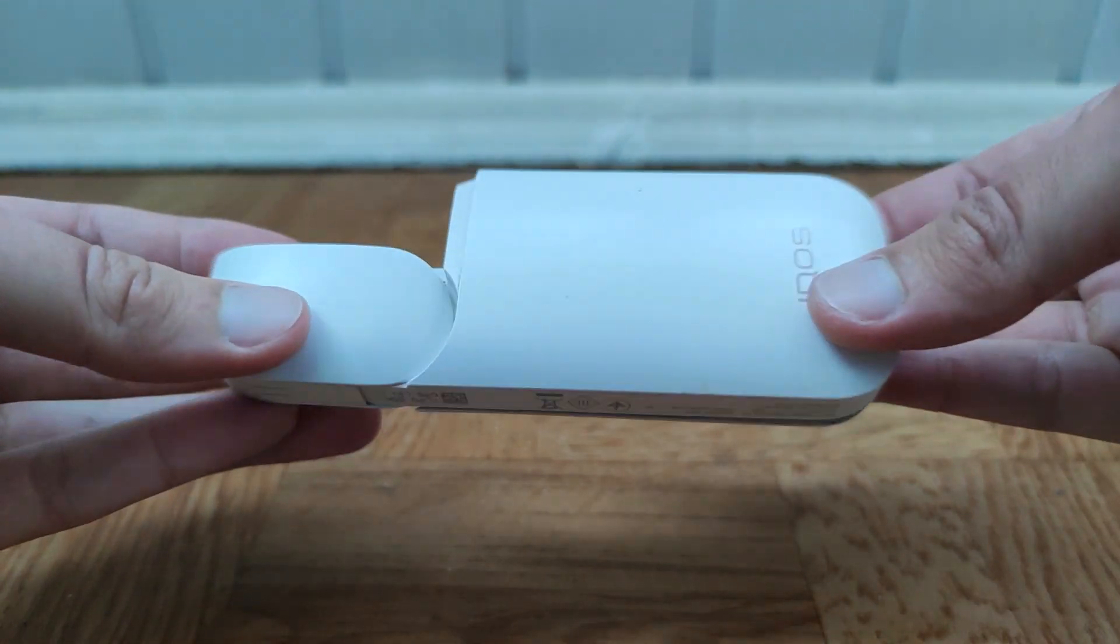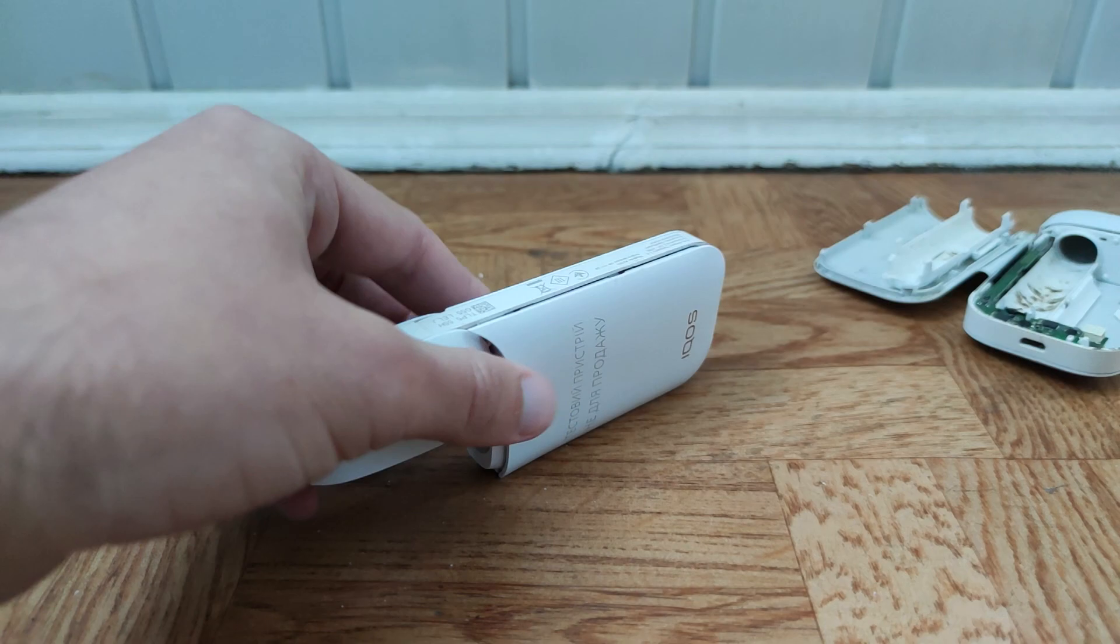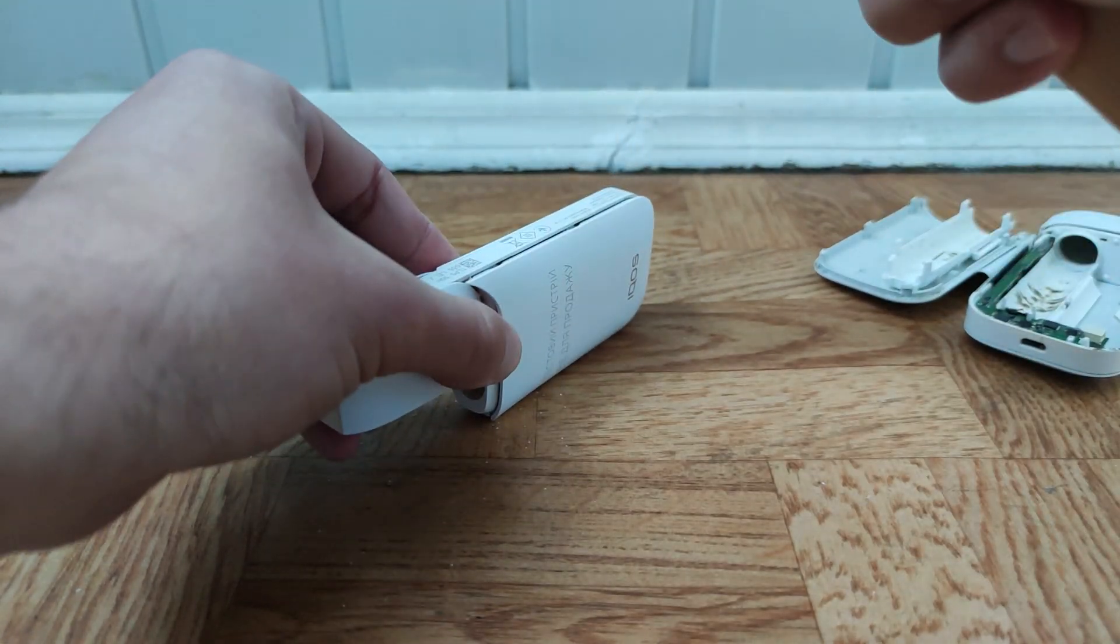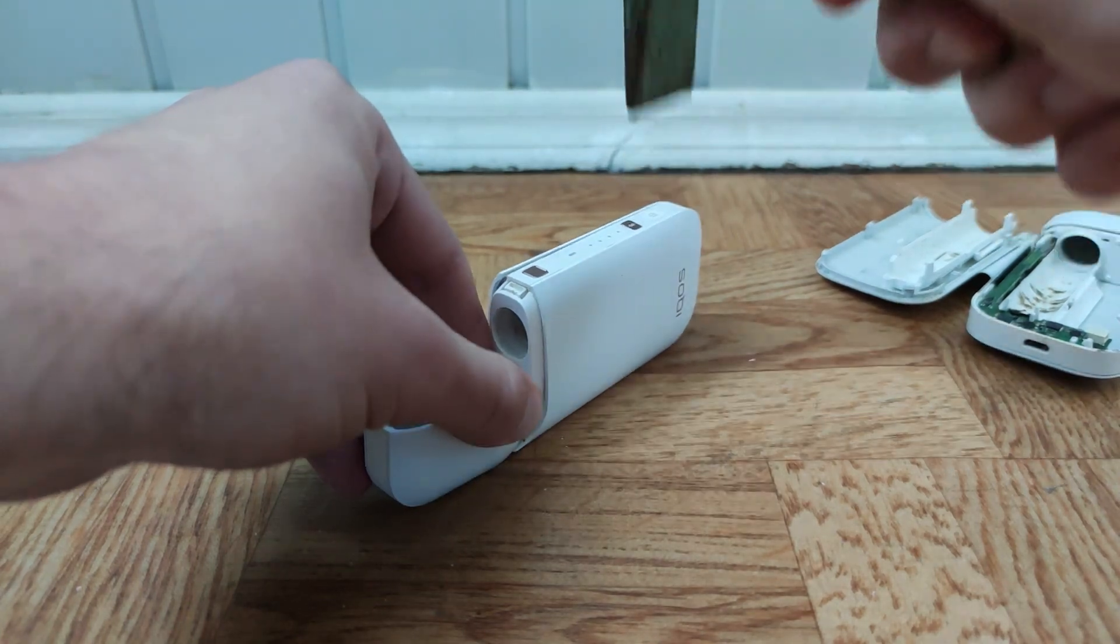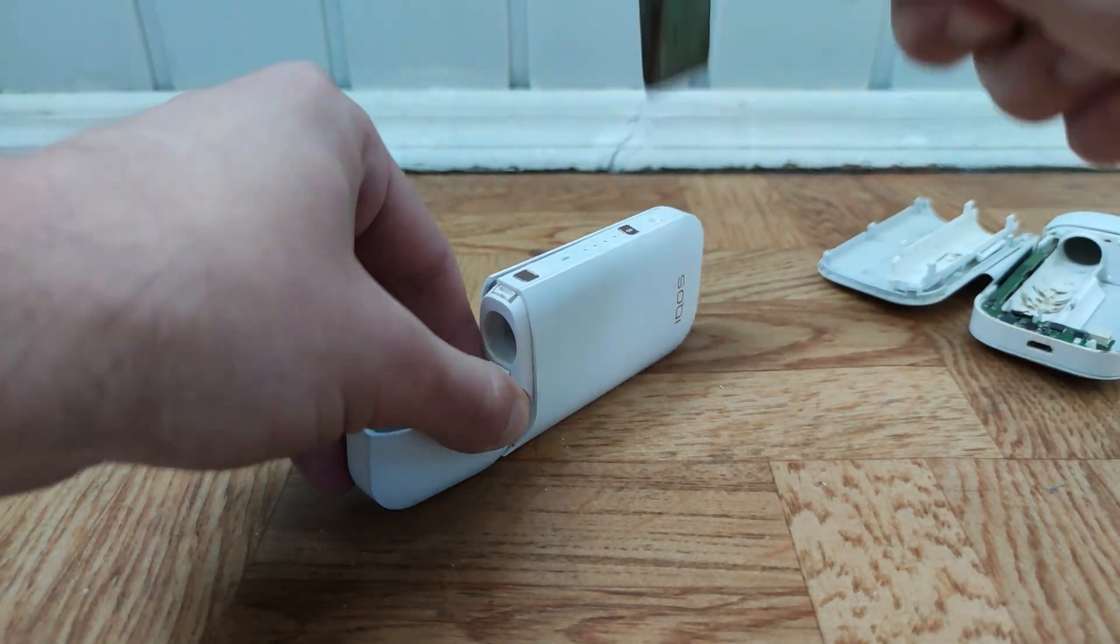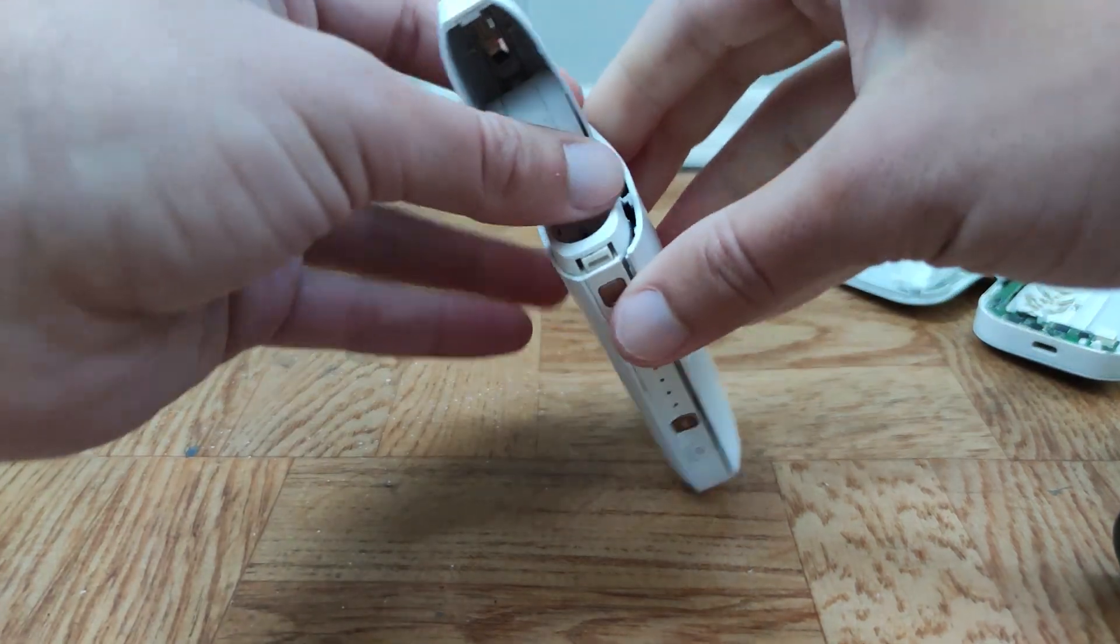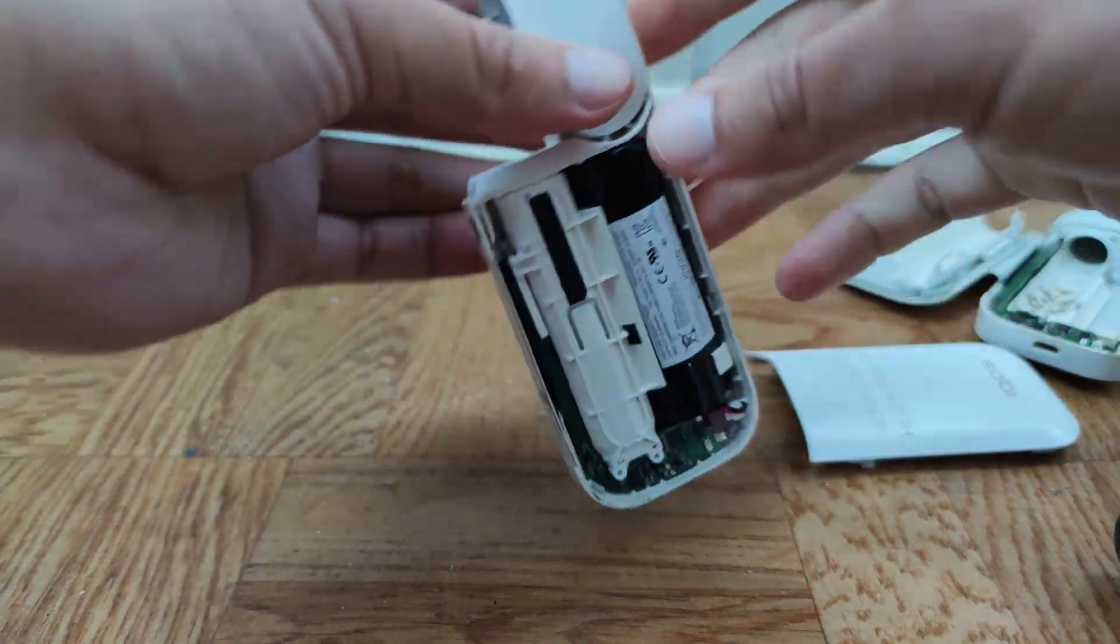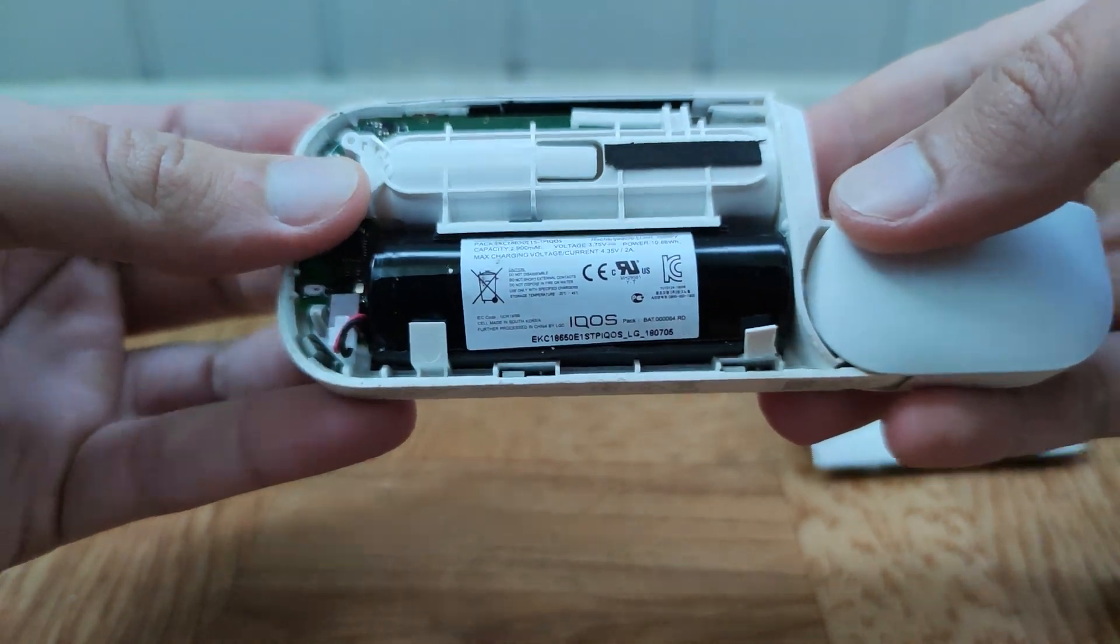First we need to extract batteries from the ICOS body. I just use a hammer to open the device body, and it's a very easy and fast way to open device body.